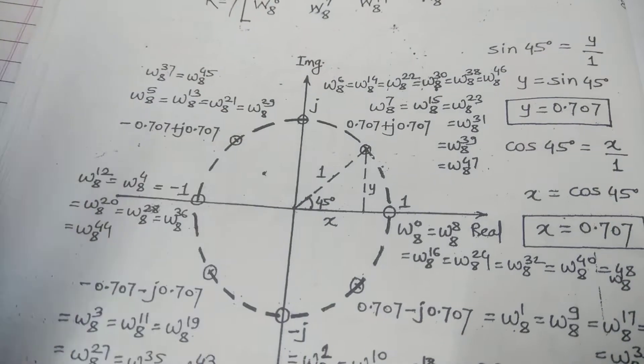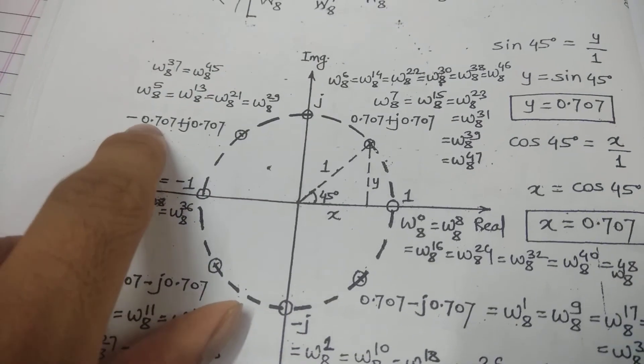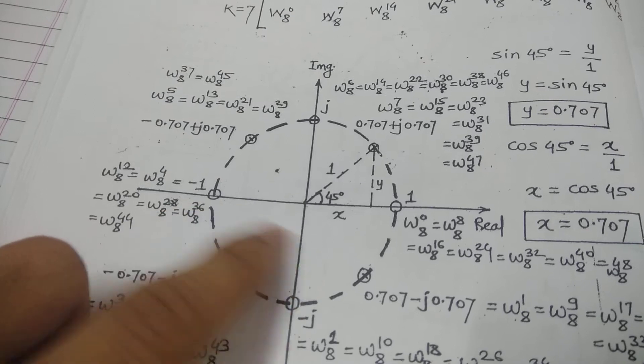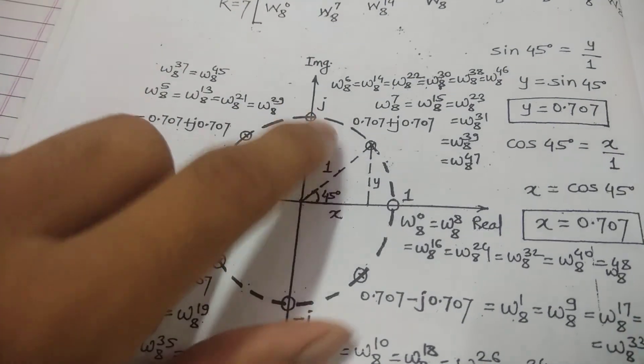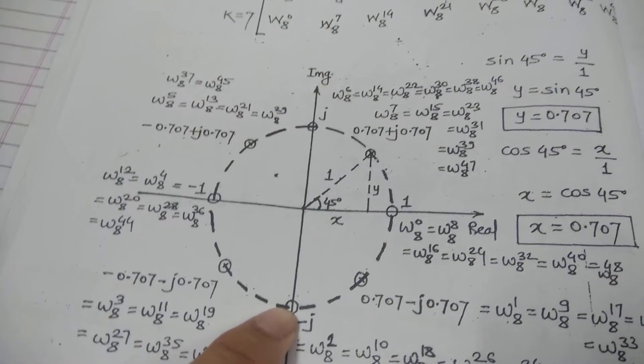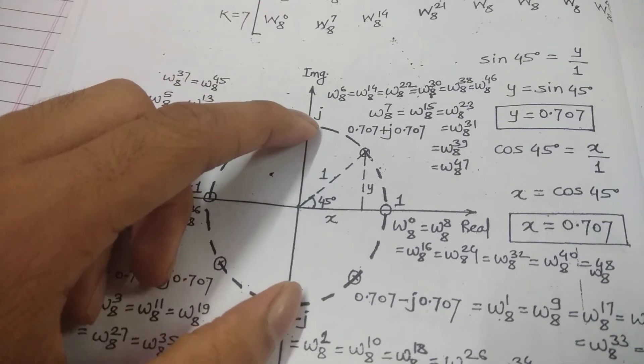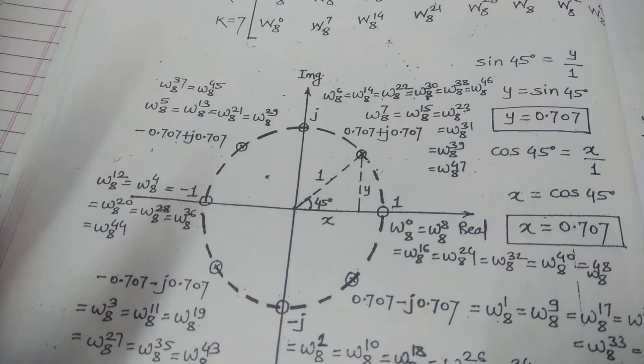Like this you can do: minus 0.707 plus j times 0.707. After that, you will consider these two axes as well. This time in the six-point twiddle factor, we neglected the imaginary axis because we had to get six points only.